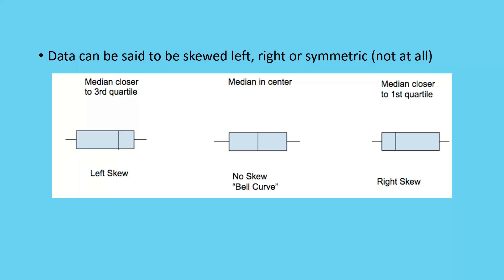So, looking at these three examples, the first one, my median is closer to my third quartile, which is my upper quartile, and so it's skewed to the left, because the long sort of arm of the box is sticking towards the left. It's a long tail.